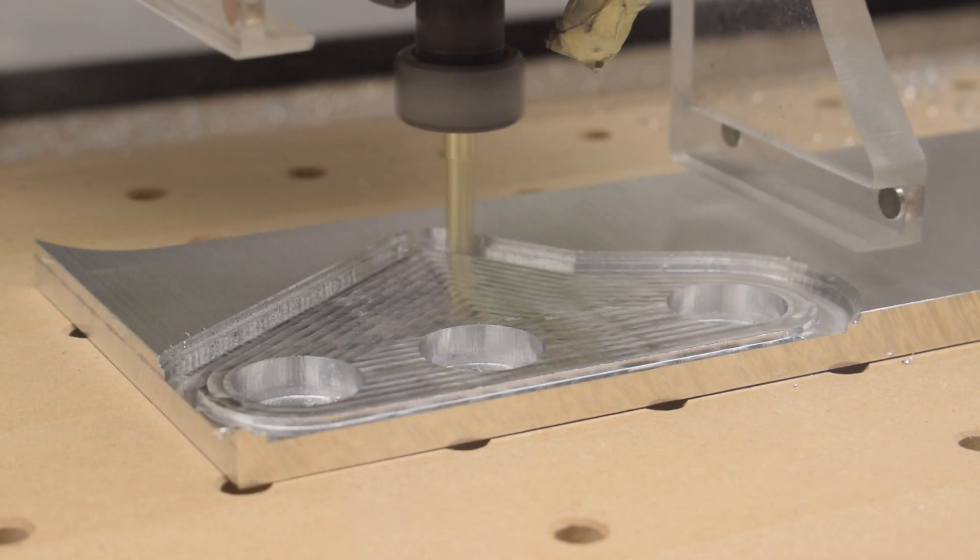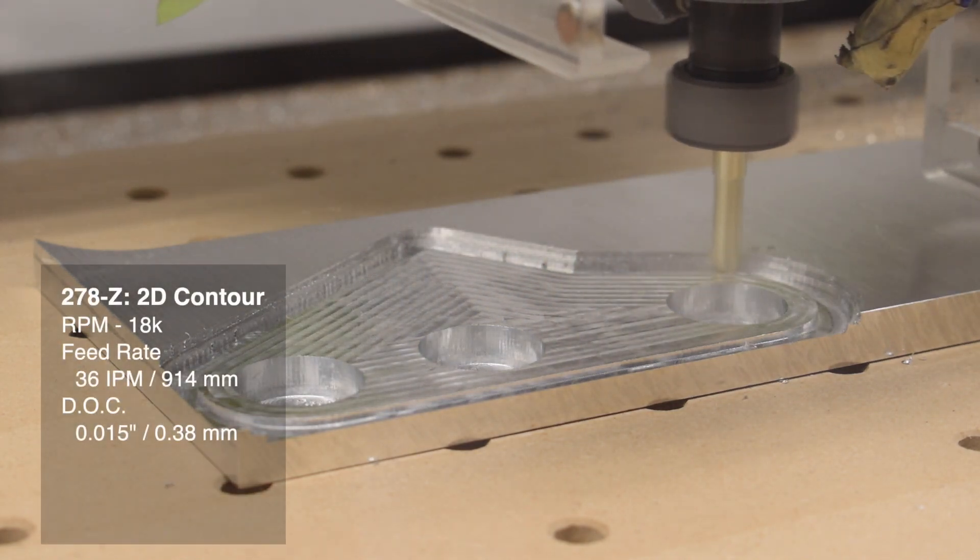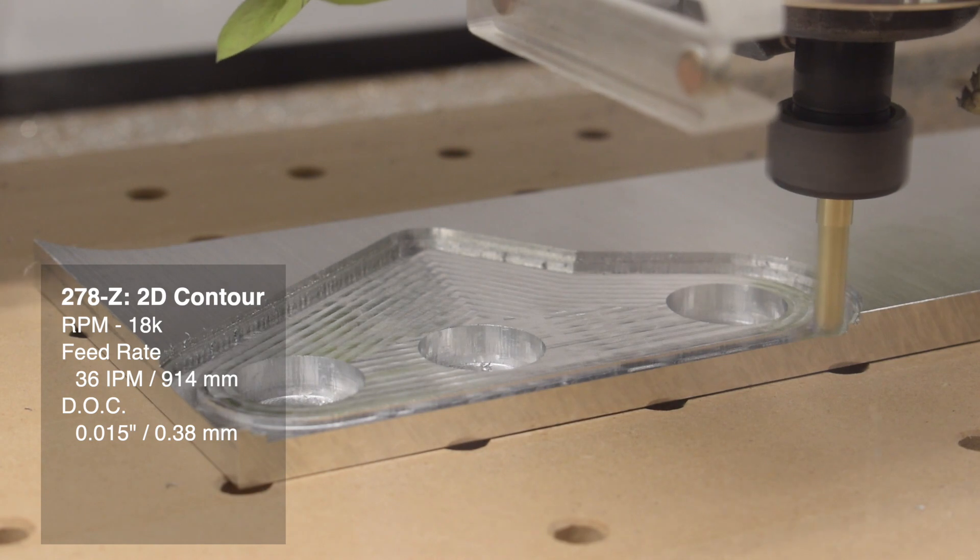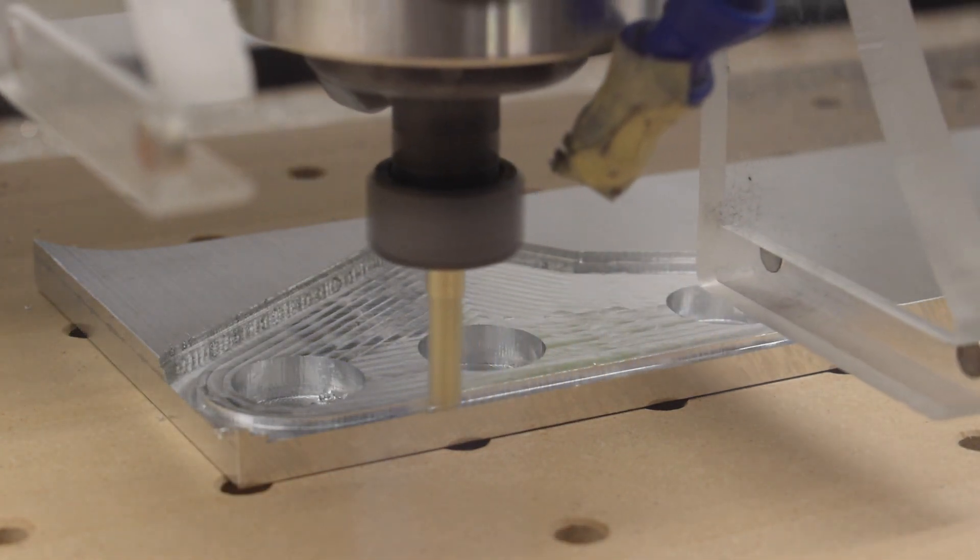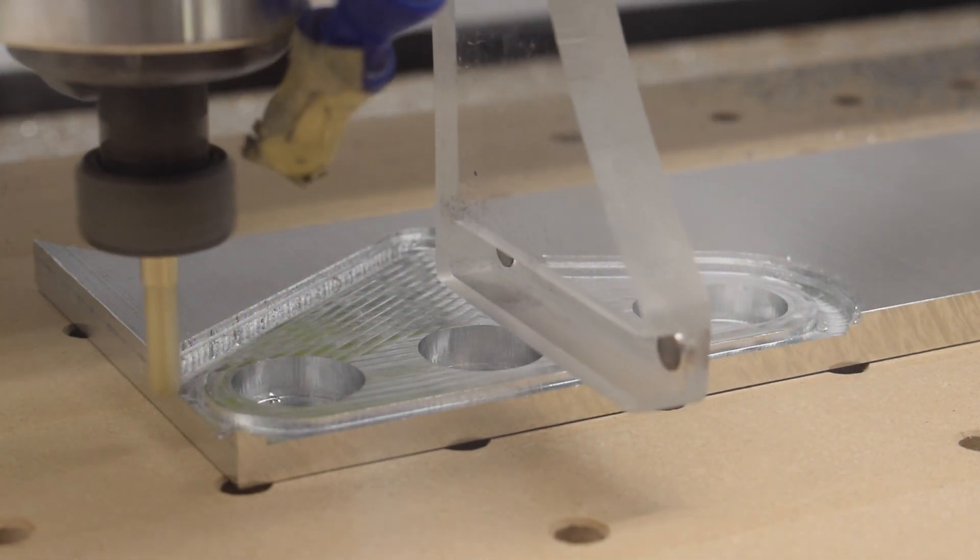Same vein of thought with contour toolpaths. 18,000 RPM, 36 inches per minute, 15 thou depth of cut. I backed off by 10% on the feed rate because as you cut deeper you'll encounter more resistance from friction along the walls.